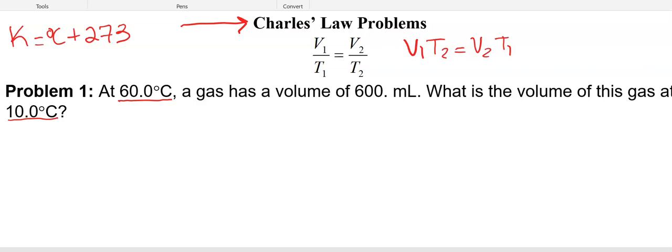So I'm going to identify my variables. So at 60 degrees C, so my T1 is 60 plus 273, which is 333. A gas has a volume of 600 milliliters. What is the volume of this gas at a temperature of 10 degrees C? So again, T2 is going to be 10 plus 273. And I apologize for the fact that the stylus makes noise, so I will try to write and talk separately.